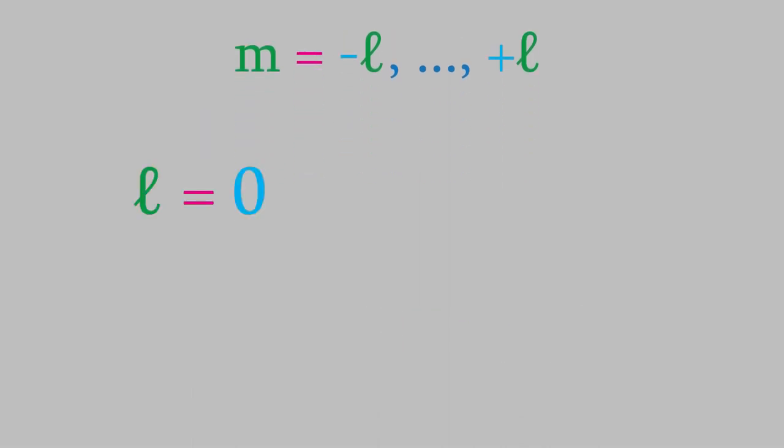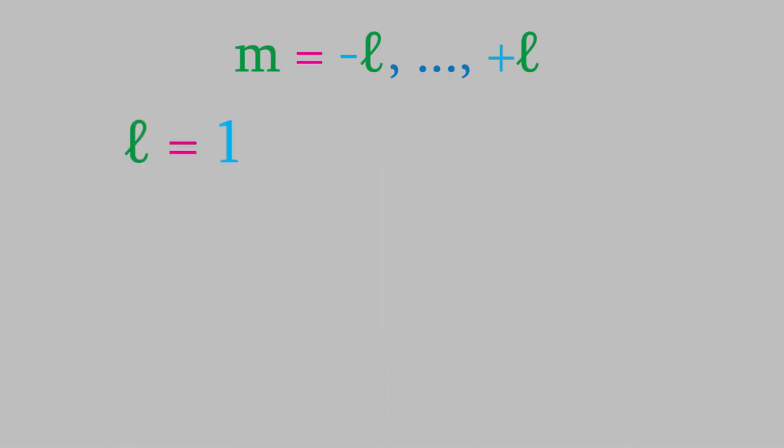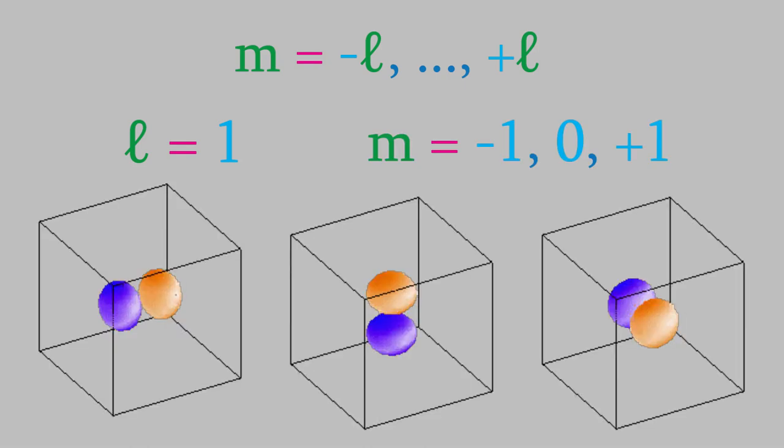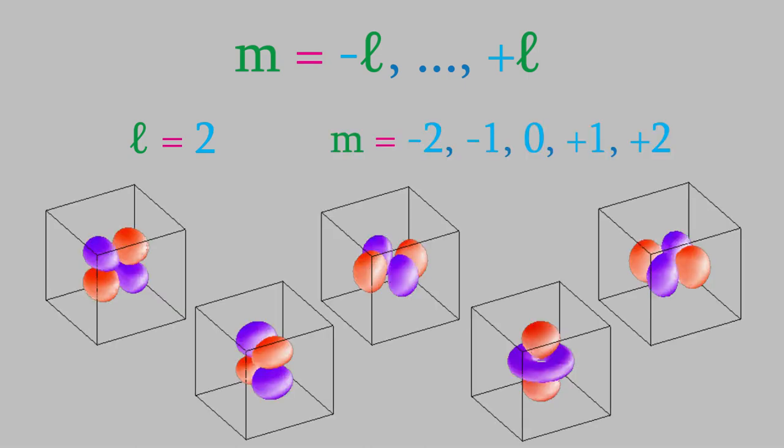So, if we have L equals zero, it's an S orbital. M can be between positive and negative zero, so it can only be zero, and that means there's only one possible orientation for an S orbital. If L equals one, it's a P orbital, and M can be between negative and positive one. Here are what those three orbitals look like. Notice that each has a different orientation. If L equals two, that means we have a D orbital, so M can be between negative and positive two. Here's what those orbitals look like.